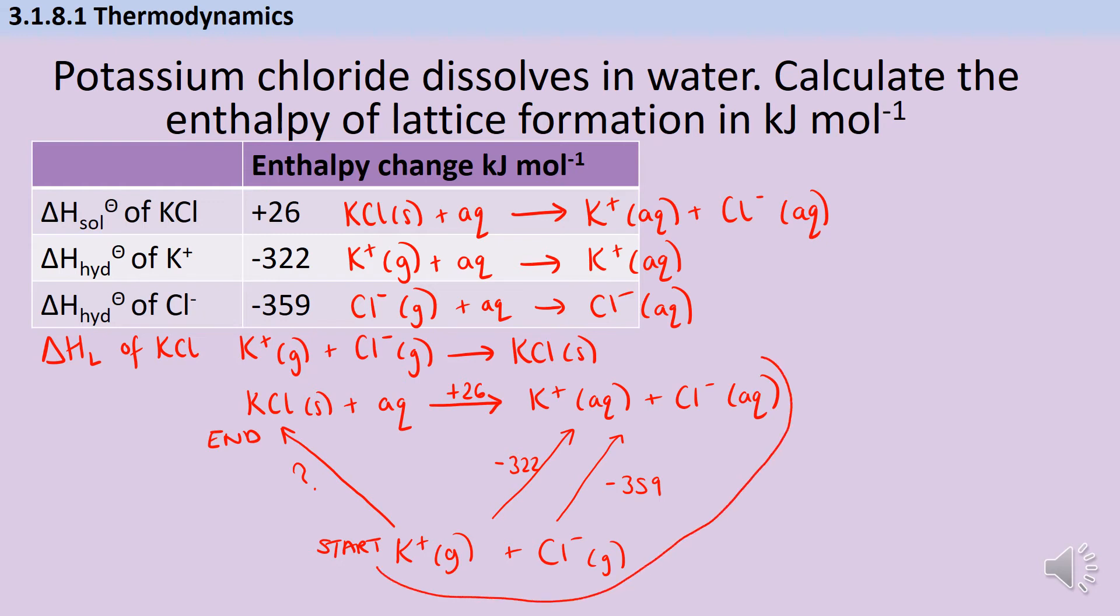So I'm going to end up with something that looks a bit like this. What I'm doing first is going the right way up these two arrows on the right hand side. So I'm going to have -322 plus -359. I don't need to do anything with the signs or flip them because I'm going the right way up the arrow.